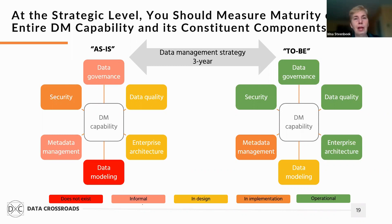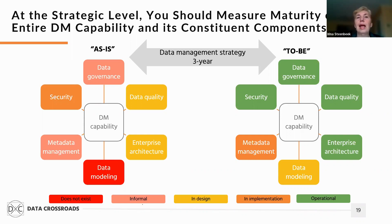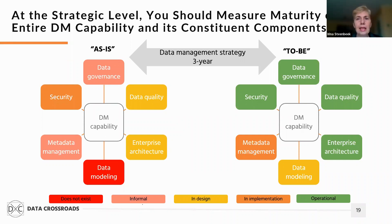Then you define which level these capabilities should reach in the specified period — this is the to-be status on the right side. The analysis between current as-is and future to-be statuses is called a gap analysis. Based on this gap analysis, you define your action plan — in this case, it would be a data management strategy or roadmap.